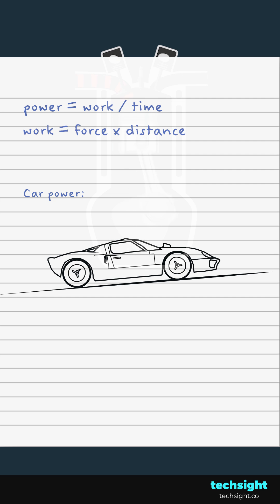power is the work something does divided by the time taken, and work is equal to the force applied times by the distance travelled. Power is also equal to force times velocity, as velocity is equal to distance divided by time.